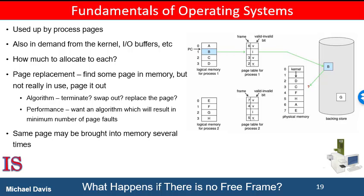It is possible, however, that each of these processes may try to use all ten of its pages, resulting in the need for 60 frames when only 40 are available. Also consider that system memory is not used only for holding program pages — buffers for input and output also consume quite a bit of memory, increasing the strain on memory placement algorithms. Deciding how much memory to allocate to I/O buffers and how much to program pages is a significant challenge. Some systems allocate a fixed percentage of memory to I/O buffers, whereas others allow both processes and I/O systems to compete for all system memory.